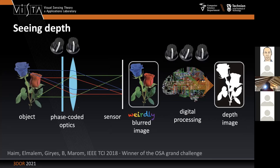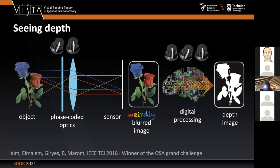The way the image is blurred across different chromatic channels — the relative amount of blur in the red, green, and blue channels — actually carries information about depth. Nearby objects will have blue blurred more, and far away objects will have the red blurred more.